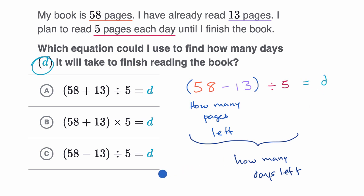Now, if we look at these choices, that's exactly what we have right over here in choice C. We can make sure that these others don't make sense. 58 plus 13, no, that would be a situation where we're reading 13 pages more than the number of pages that are in the book. That doesn't make sense. And that's happening for both choice A and choice B.